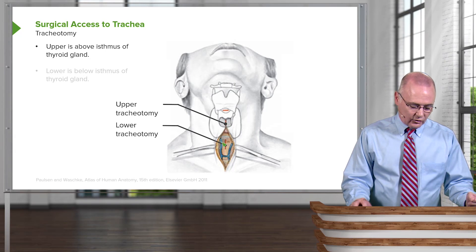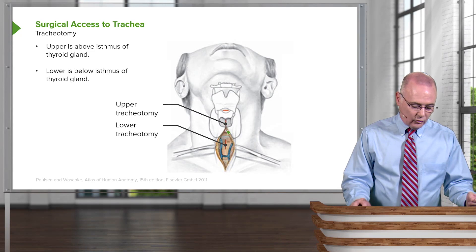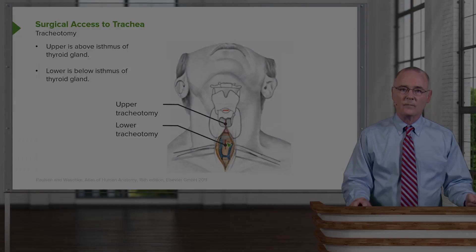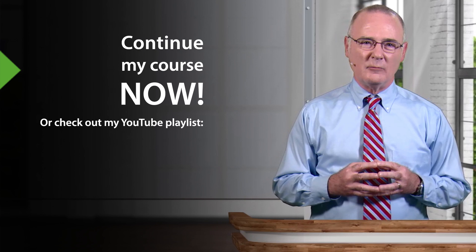The lower tracheotomy is going to be inferior to the isthmus of the thyroid gland, with the vertical incision of that approach shown in this region here.